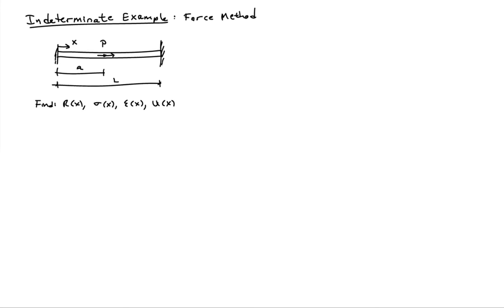To show that the problem is indeterminate, let's look at a free body diagram of the entire bar. Separating it from the two supports, there's a reaction force R1 at the left and R2 at the right — two unknown reactions, but only one equilibrium equation: the sum of forces in the X direction. So with two unknowns and one equation, the problem is, in fact, indeterminate.